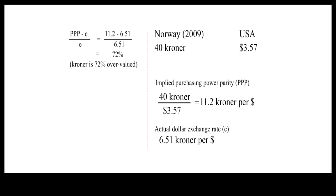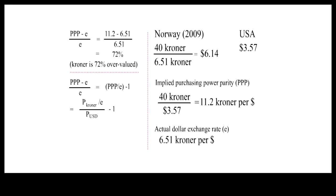The same formula for computing over or undervaluation of foreign currencies can be transformed to compare the Big Mac prices in US dollars. Let's divide the numerator and the denominator of the formula each by the actual exchange rate, E. The transformed formula says that we could first convert the kroner price into dollar price using the actual exchange rate, E, and divide the dollar price in Norway by the dollar price in the US. We can get the same 72% overvaluation of the kroner by subtracting one from the division result.